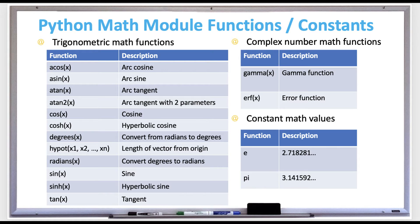For some more complex math functions, the table on the upper right corner shows the gamma function and erf for the error function. What I think is very useful are the constant math values — you can just say math.e to get the value of e, or math.pi to get the value of pi.